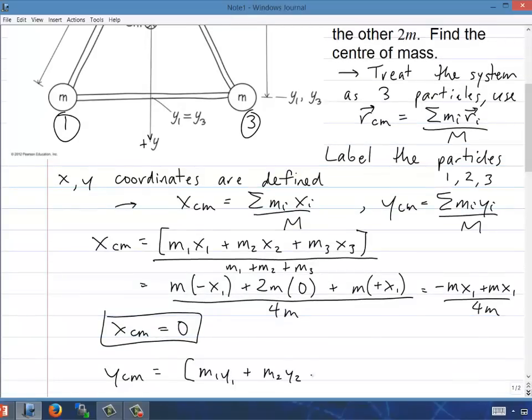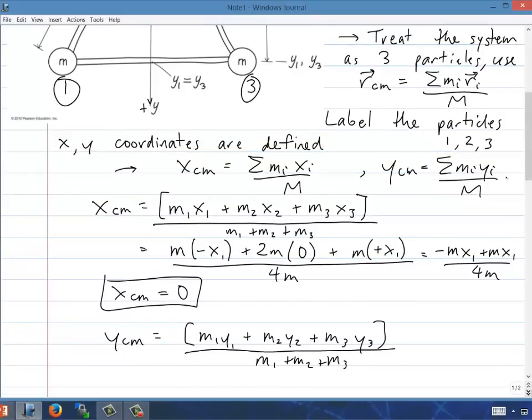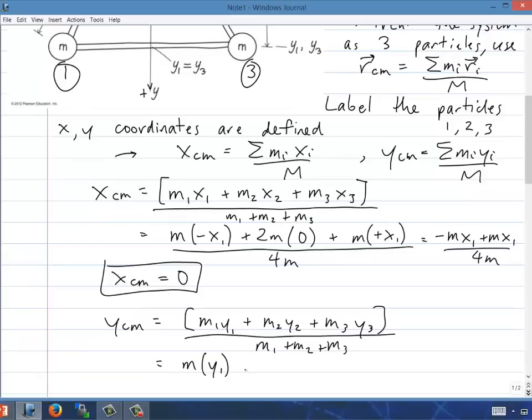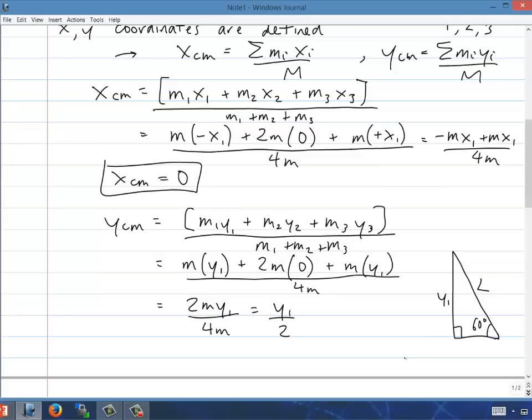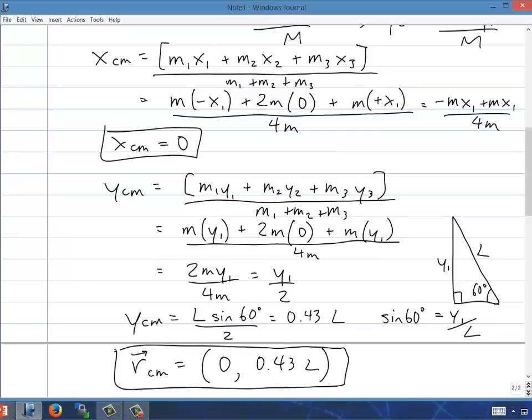Next we'll do the same basic equation for Y. m1 y1 plus m2 y2 plus m3 y3 over m1 plus m2 plus m3. Plugging those all in, m1 times plus y1 plus 2m times 0 plus m3 times plus y1 over 4m. And so in that case you get 2m times y1 over 4m. The m's cancel, you just get y1 over 2. Where y1, you have to draw the triangle there. So this is half the equilateral triangle, there's 60 degrees, and there's the right angle. The opposite is y1, the hypotenuse is L. So we will use sine 60 degrees equals opposite over hypotenuse. So solving for y1 and plugging that in, we've got L sine 60 over 2 is the Y position of the center of mass. And plugging into my calculator, I get 0.43 is sine 60 over 2. So the total position of the center of mass in X and Y is 0, 0.43 L.